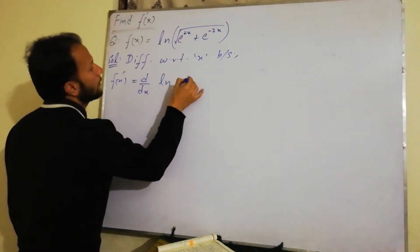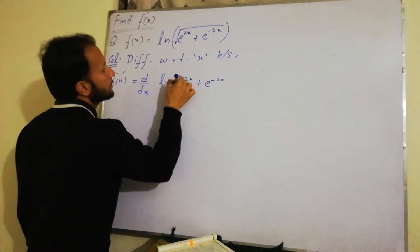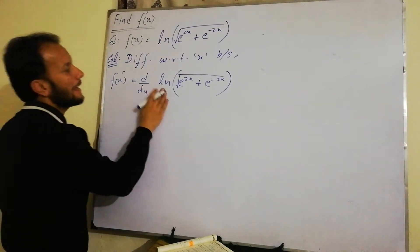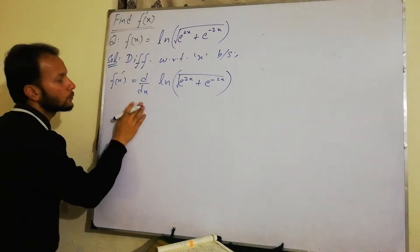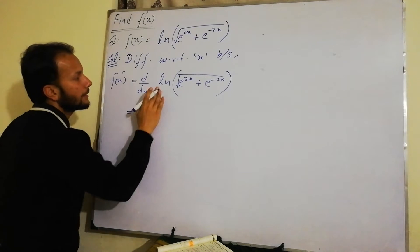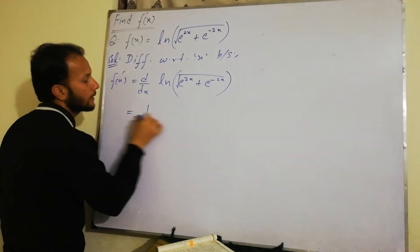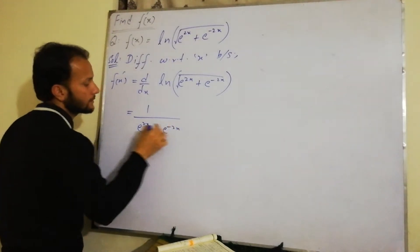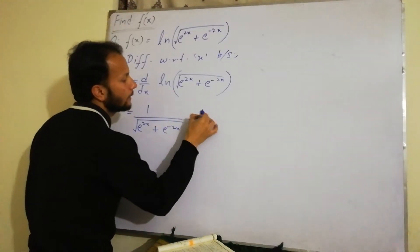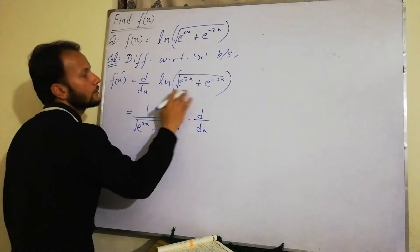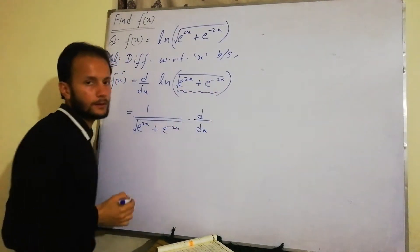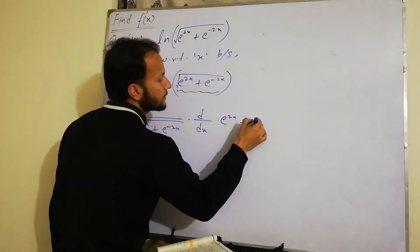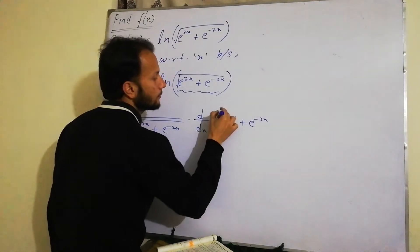We differentiate the natural log of e to the power 2x plus e to the power minus 2x, all under root. Using the natural log derivative rule, we differentiate: 1 over (e to the power 2x plus e to the power minus 2x, under root), multiplied by the derivative of e to the power 2x plus e to the power minus 2x under root.